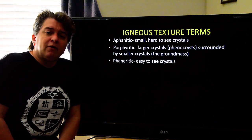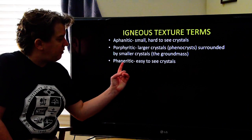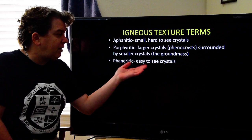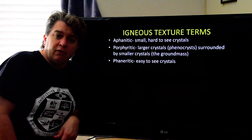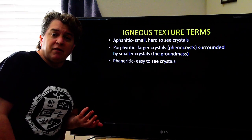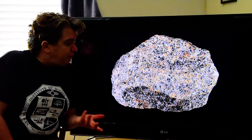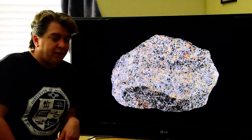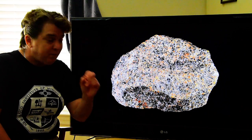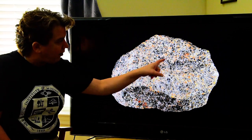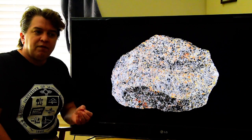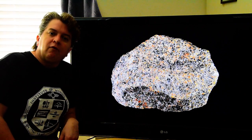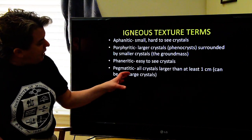Phaneritic rocks use that same Greek root word 'phaner,' meaning visible — these are going to be easy-to-see crystals. They don't have to be big, they just have to be easy to see. For instance, on this rock right here, if I said 'point to a pink potassium feldspar crystal,' you should be able to come up and say 'right there, and right there, and right there.' They're not huge, but you can see them without a microscope.